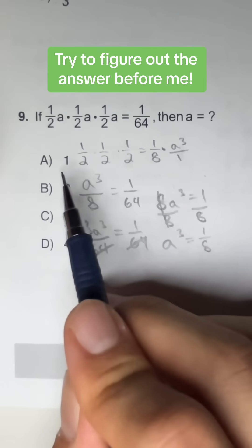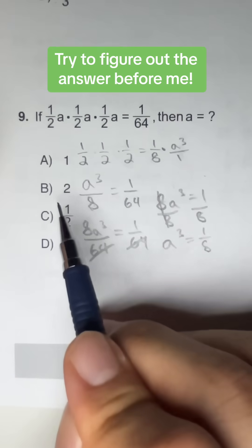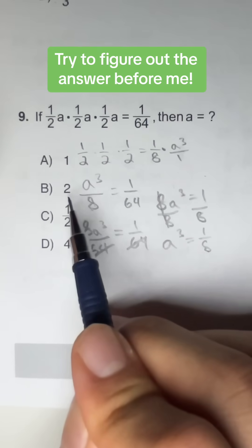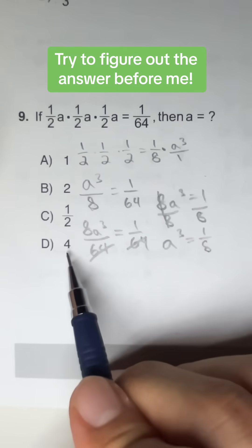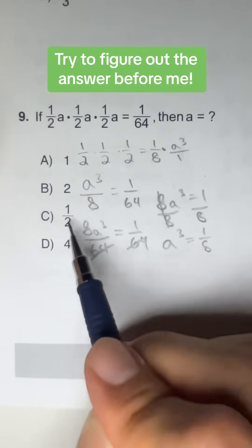If we multiply 1 by itself 3 times, that's going to give us 1. If we multiply 2 by itself 3 times, that's going to give us 8. If we multiply 4 by itself 3 times, that's going to give us 64. So it must be C.